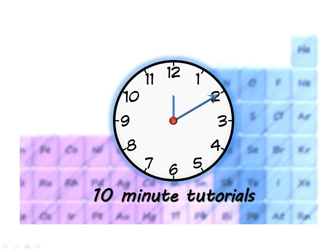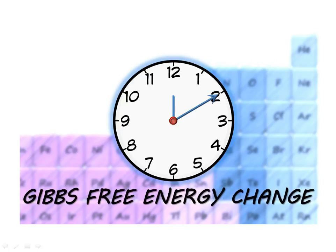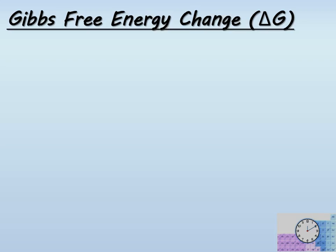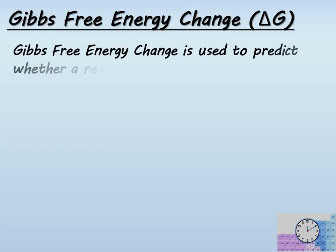Hello and welcome to another 10-minute tutorial. In this session we will be looking at the subject of Gibbs free energy change. Gibbs free energy change, or delta G, is used to predict whether a reaction is feasible.